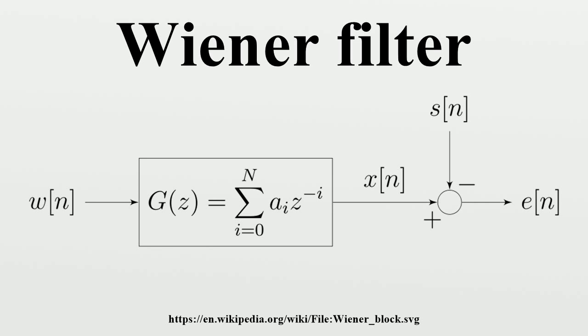The Wiener filter can be used to filter out the noise from the corrupted signal to provide an estimate of the underlying signal of interest. The Wiener filter is based on a statistical approach, and a more statistical account of the theory is given in the minimum mean square error estimator article.